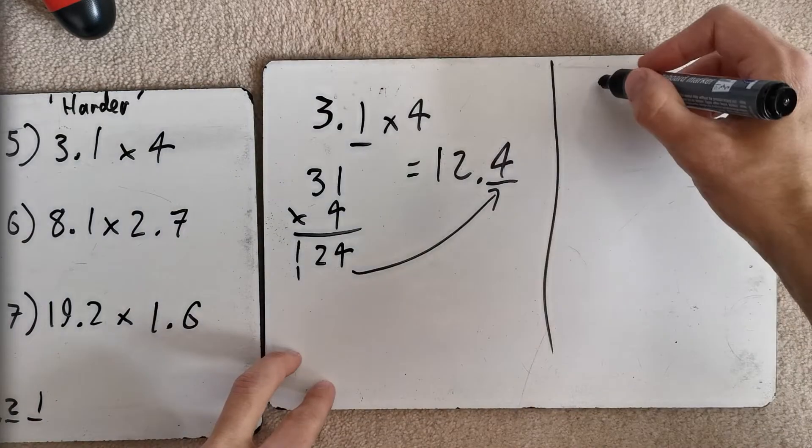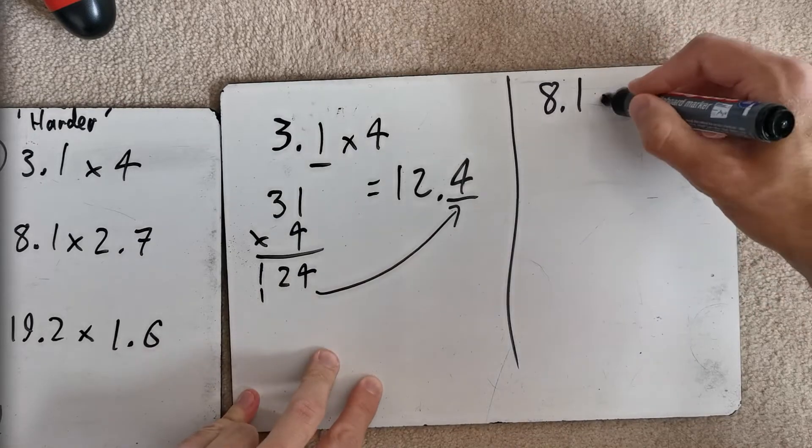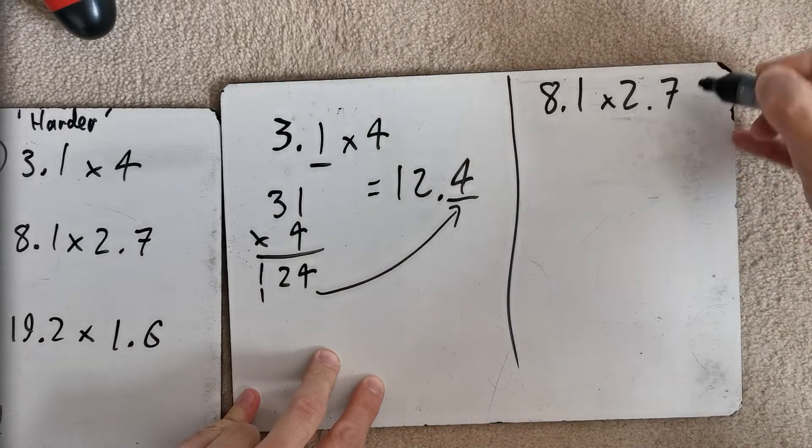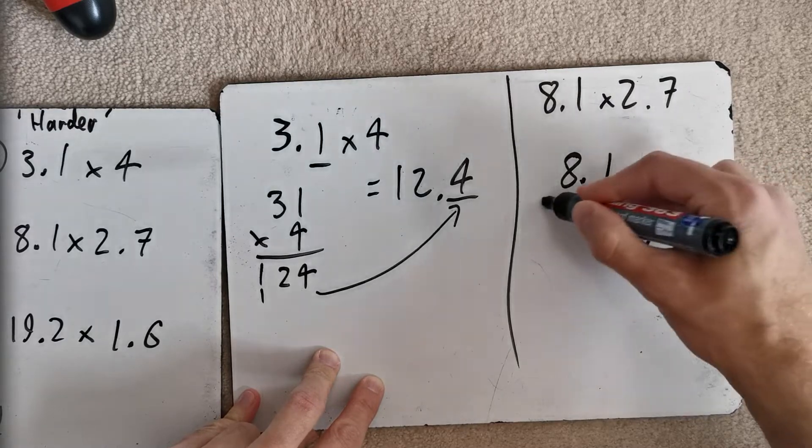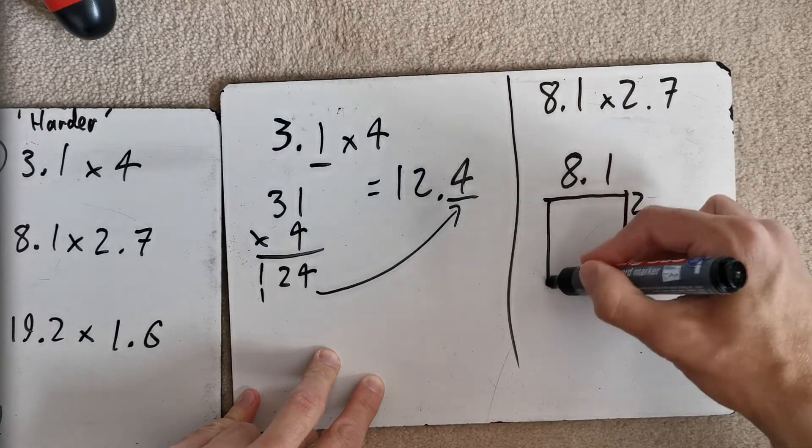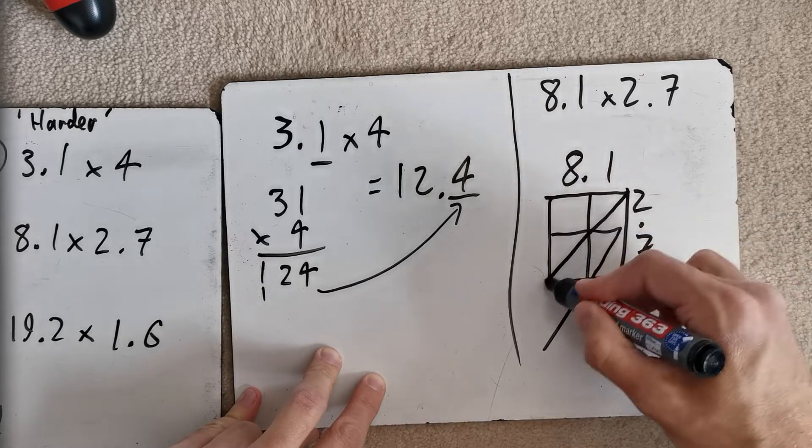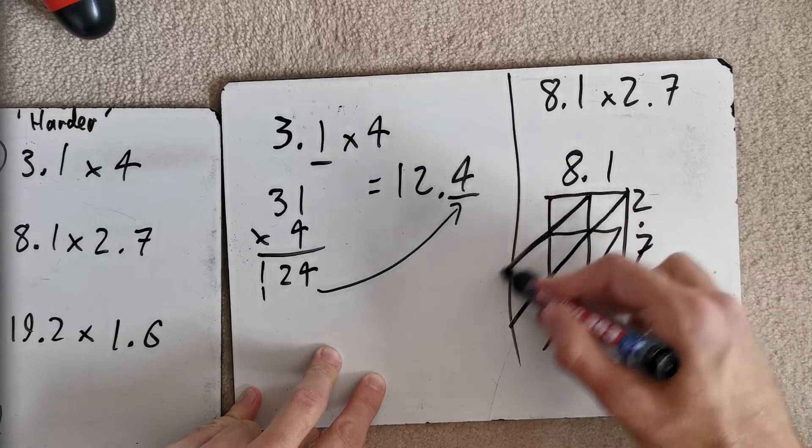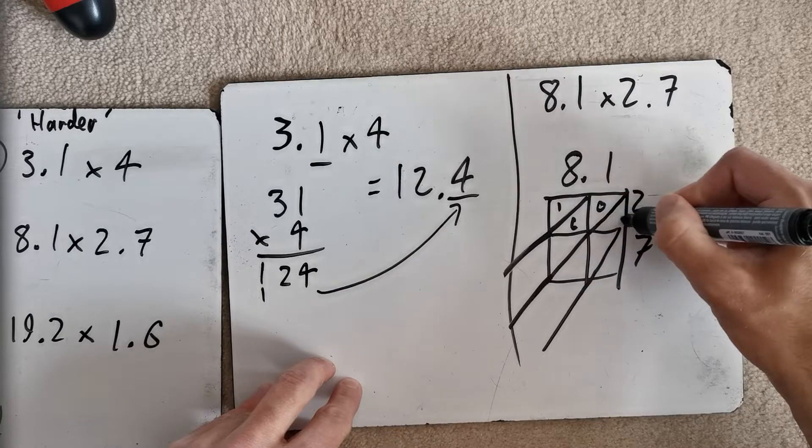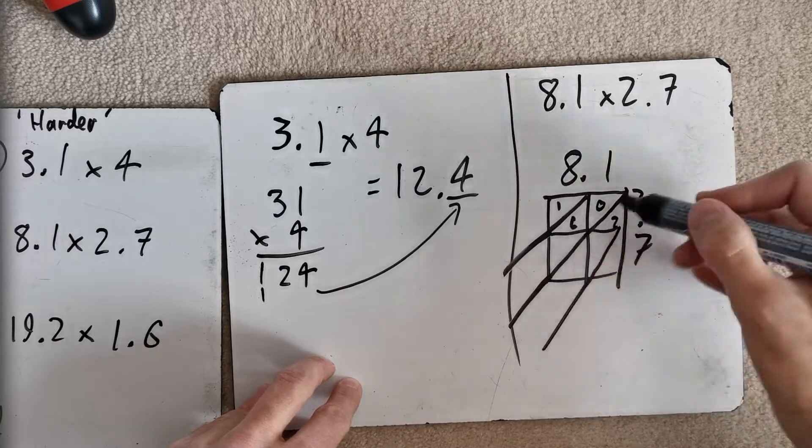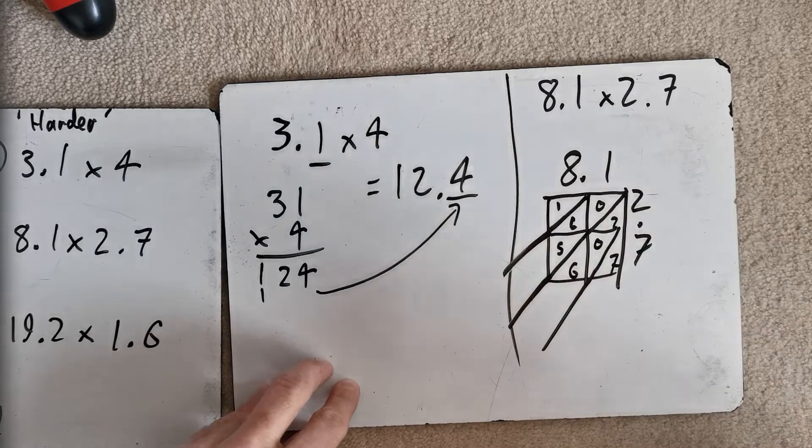Next up, I'm going to use the Chinese method for this one. 8.1 times 2.7. We're going to do 8.1, 2.7. And I am going to do it like this. Corner to corner. Corner to corner to corner. Corner to corner. There we go. 8 times 2, 16. 1 times 2 is 2. 8 times 7 is 56. 1 times 7 is 7. Okay.